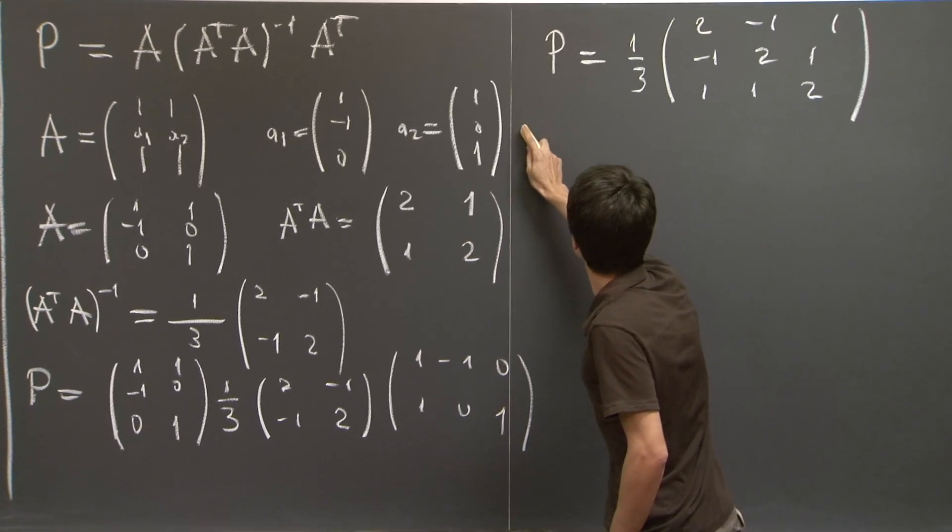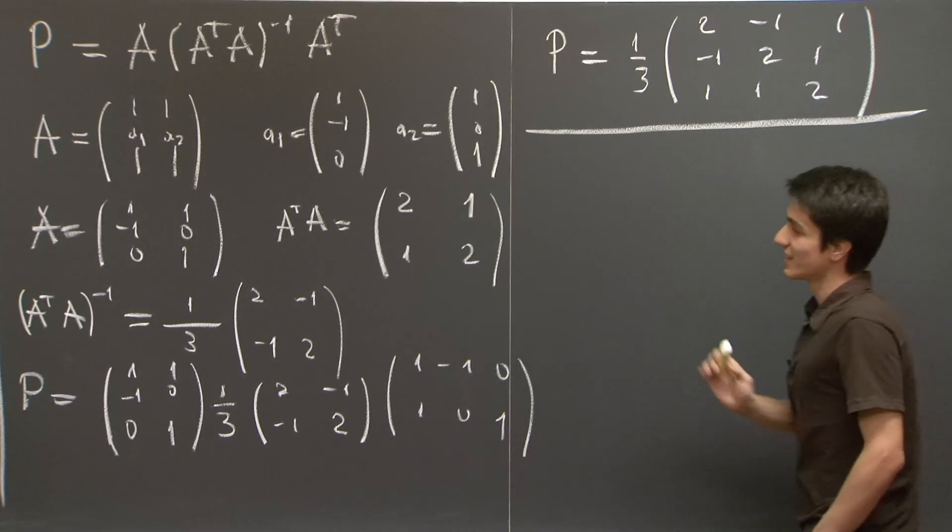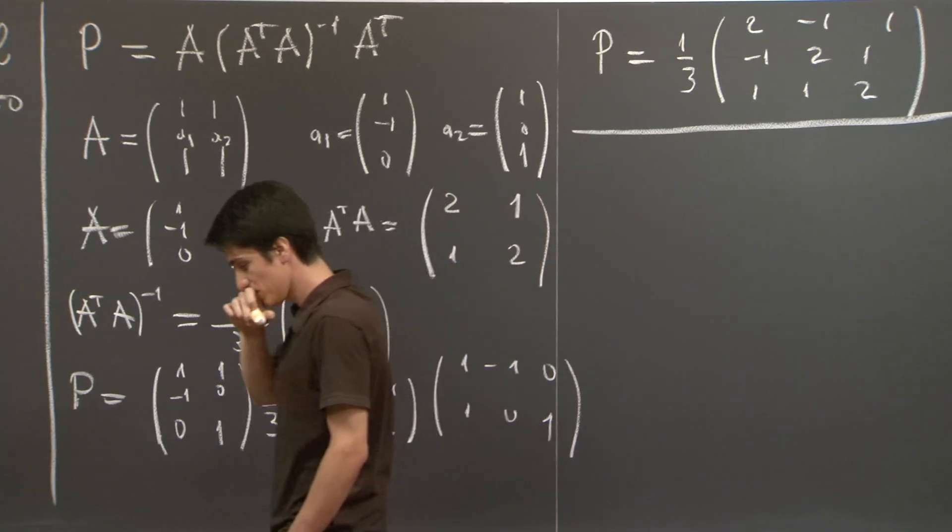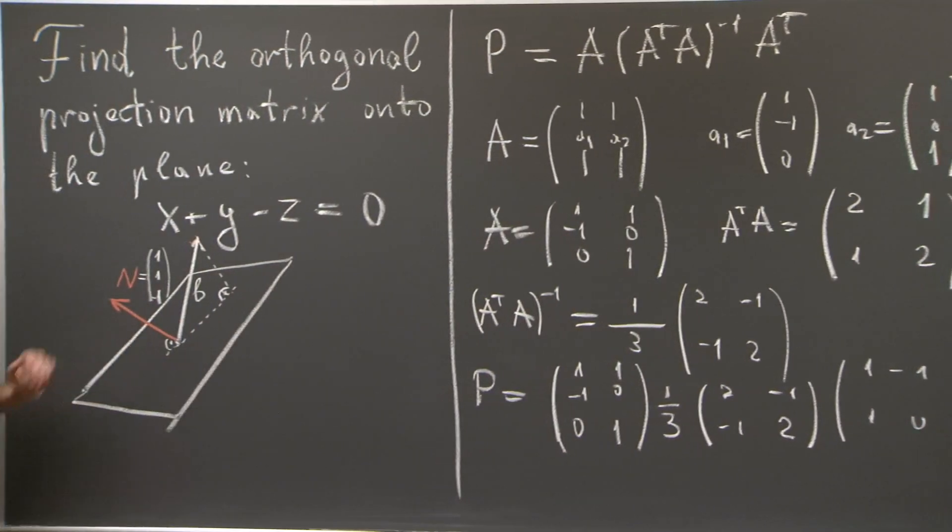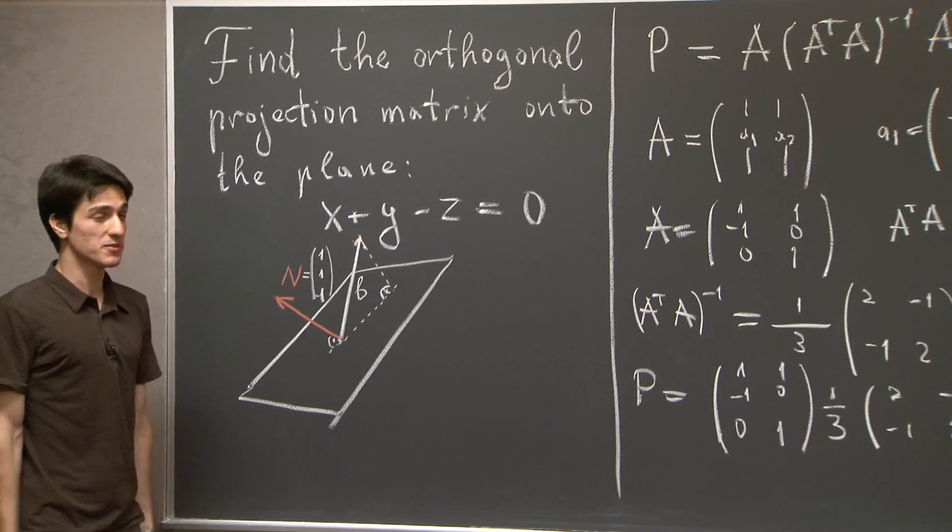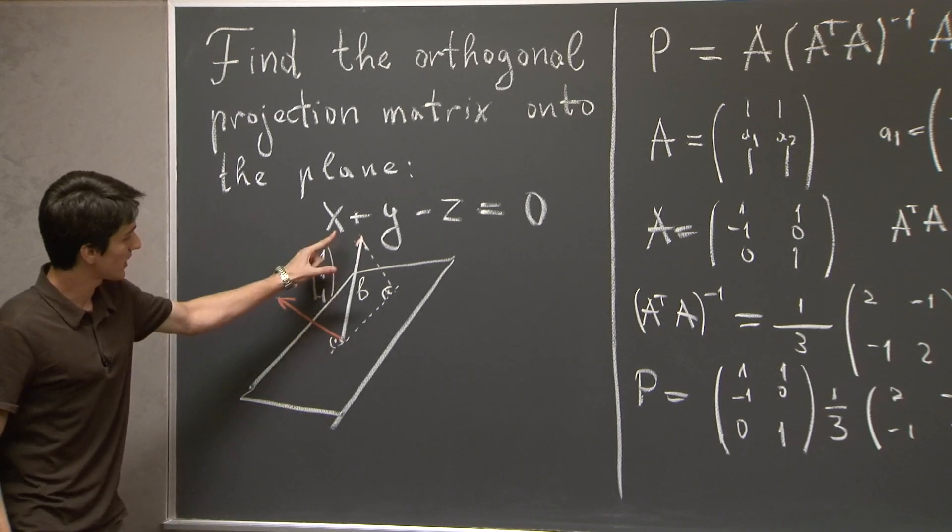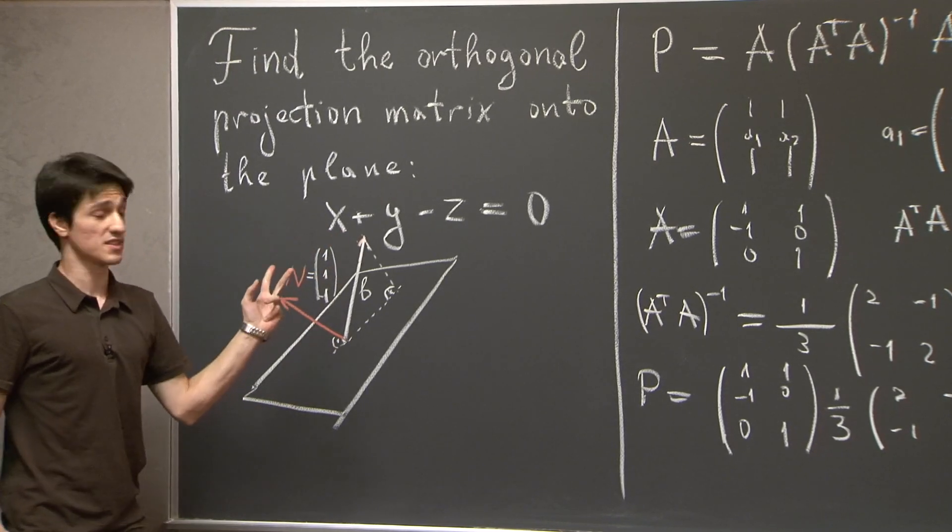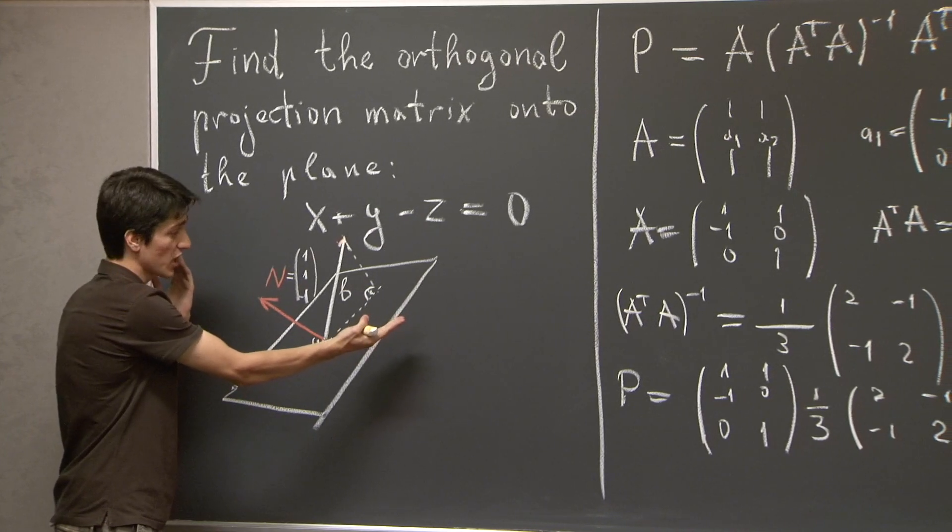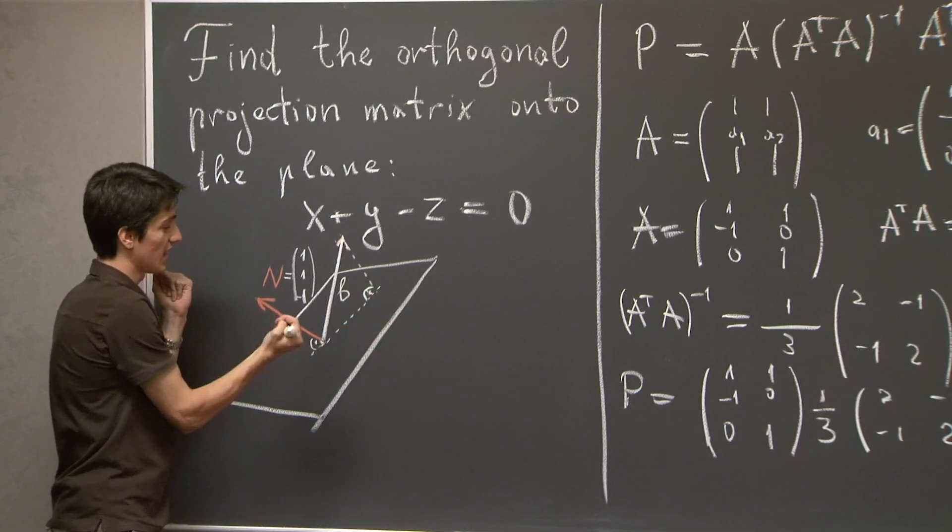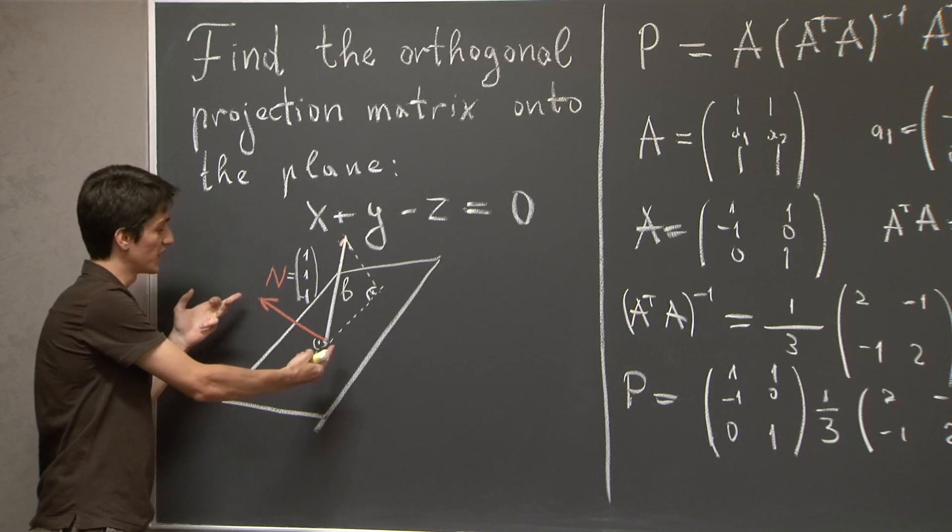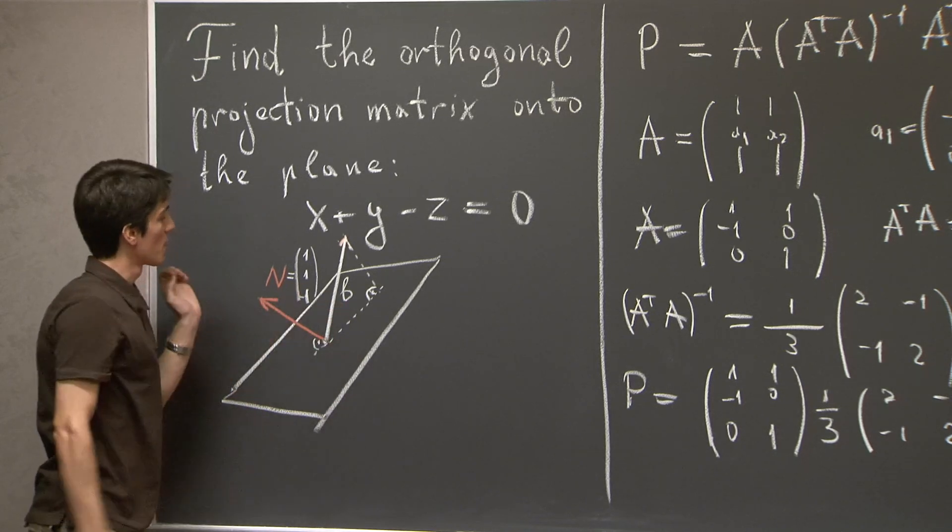So let's see what would be an easier approach. Well, let's go back to the sketch here. And let's make the following observation, that any vector is a sum of two components. The first component is its projection onto the plane. And the other component is its projection onto the orthogonal complement of the plane.